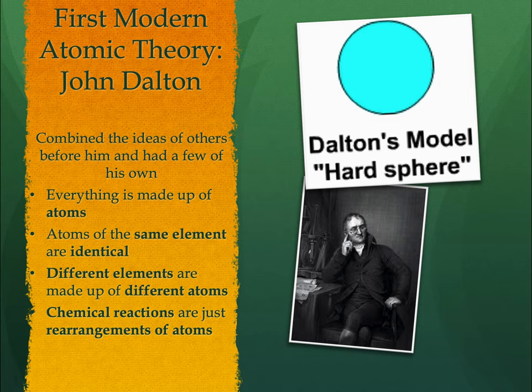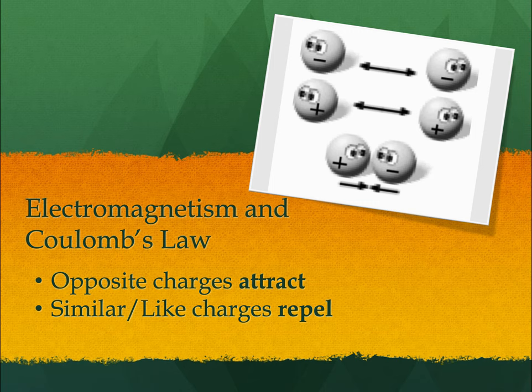At some point we transitioned from this hard sphere model to get closer to what we think atoms are today. In order to find subatomic particles, we used electromagnetism. Coulomb's law tells us that opposite charges attract and like charges repel. We can use electricity and magnetism pretty interchangeably, and you'll be able to see that in the cathode ray tube experiment.